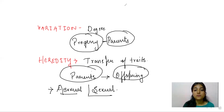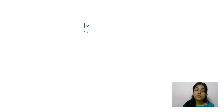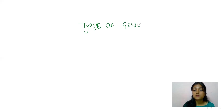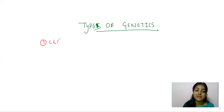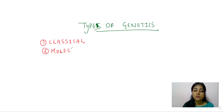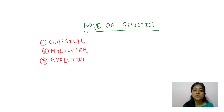Now we will study the types of genetics. There are three types of genetics: the first one is classical, the second one is molecular, and the third one is evolutionary. We are mainly concerned with the first one, that is the classical type, but we will study the definitions of all three.